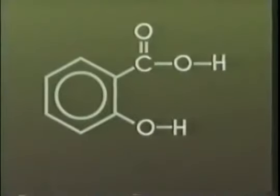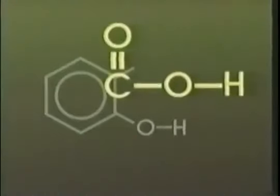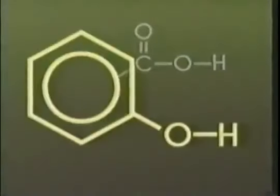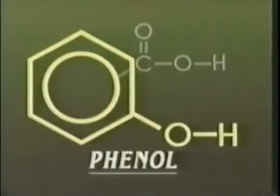Salicylic acid is a compound which consists of a 1,2-di-substituted benzene ring. The functional groups on the benzene ring are a carboxylic acid and a hydroxyl group. The benzene ring together with the hydroxyl group form what is called a phenol.